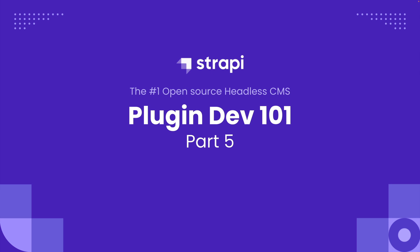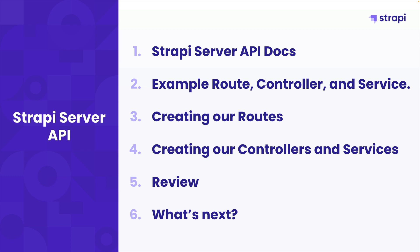This is part 5 of our introduction to plugin development with Strapi version 4. If you missed any of the previous videos, check out the card above to catch up. In this video, we're going to finish the backend functionality of our plugin. I'll show you the Strapi server API docs as a reference, examine the route, controller, and service created by the CLI, then create our own routes, controllers, and services for our to-do application, and test it with Insomnia. Finally, we'll review what we learned and cover what's next.